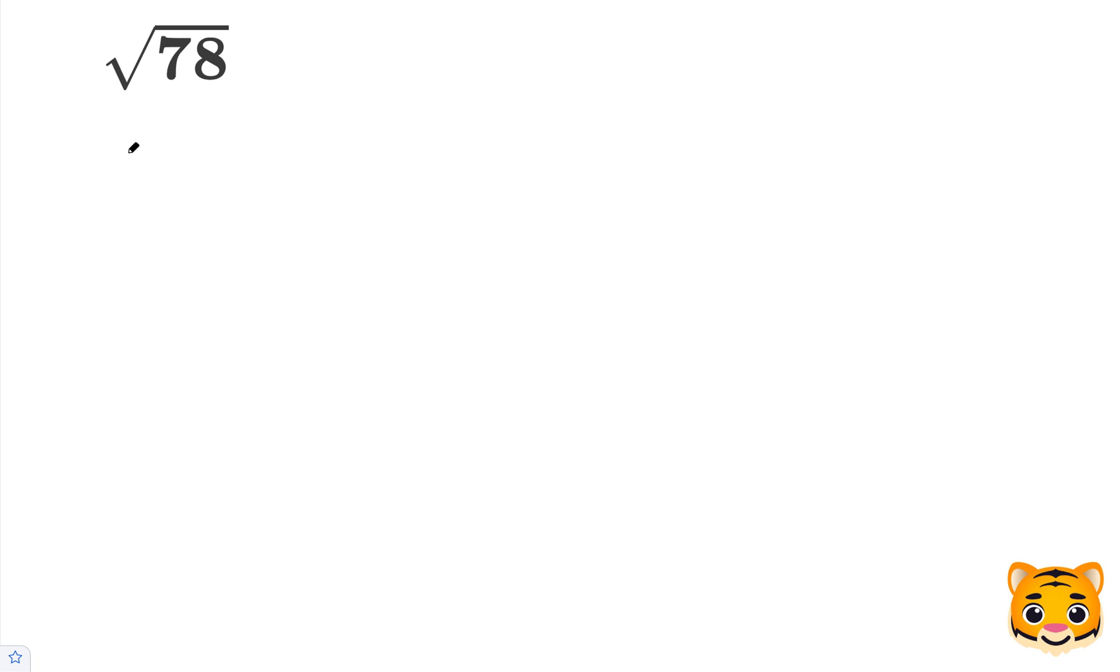First we can try 8 squared, which gives us 64. We can also try 9 squared, which will give us 81. You can see that 78 lies between 64 and 81. However, it's a lot closer to 81, so we'll consider that when looking for a decimal approximation.